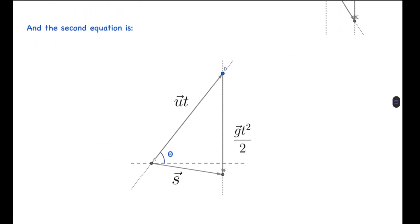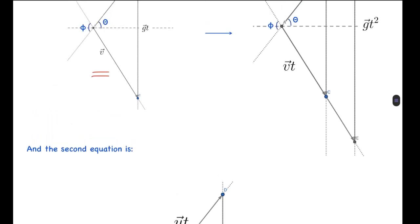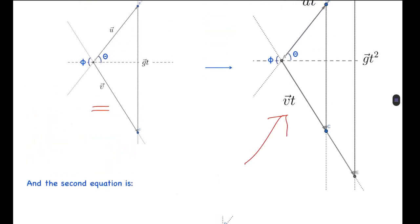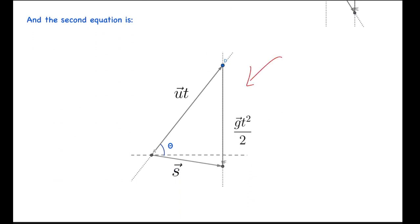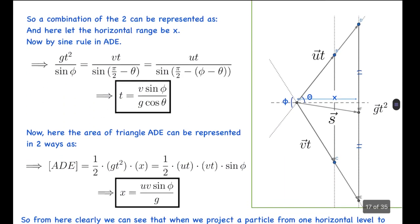The second equation gives: ut plus ½gt² equals s. So this is the ut vector, this is the ½gt² vector, and s is the displacement vector of the particle. We can superimpose these two vector diagrams, and from the superposition we can see that the point at which the s vector intersects this line comes out to be the midpoint of that line. I have assumed the particle is projected at angle theta with the horizontal, and the angle between the initial and final velocity is phi.